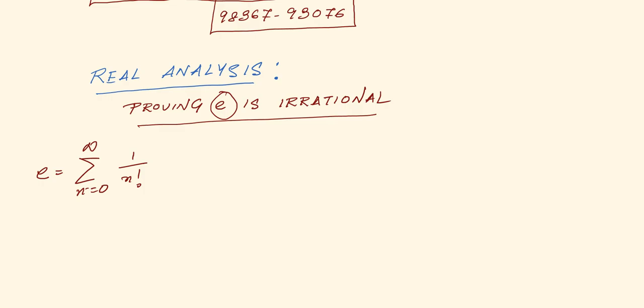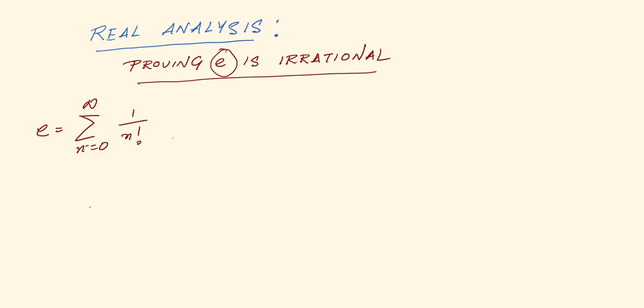So what we do have right now is let S_k equal to the summation from n equals 0 to k of 1 by k factorial, so that e minus S_k is equal to the summation r equals 1 to infinity of 1 by k plus r factorial.